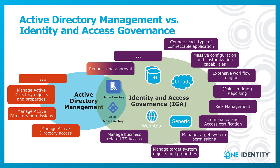Joiner, mover, leaver processes, as we have learned, exist in both systems. And of course in the One Identity solution world there are also request and approval processes in both systems. In the world of One Identity, we are talking about Active Roles on the left hand side and Identity Manager on the right hand side of the slide.